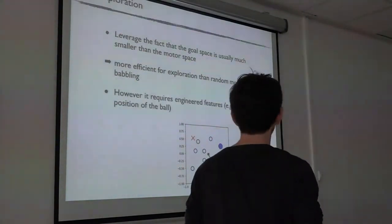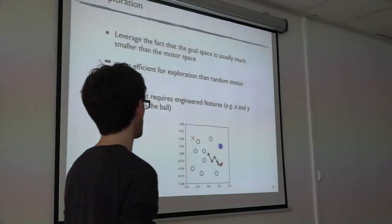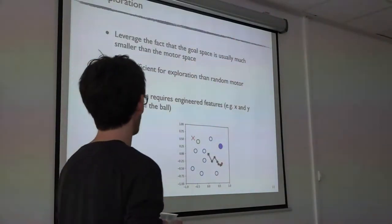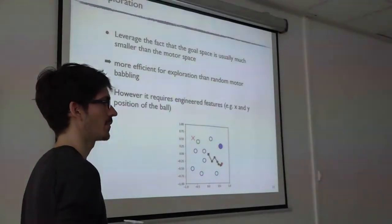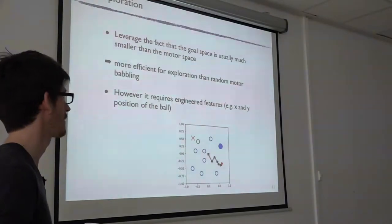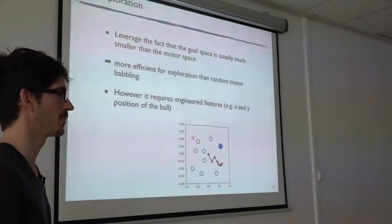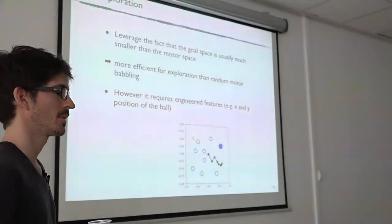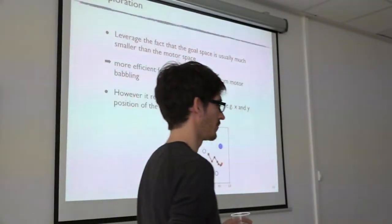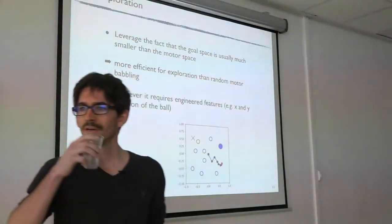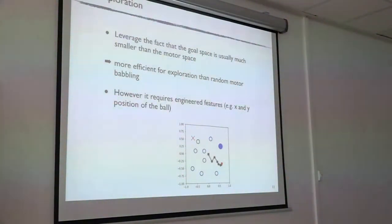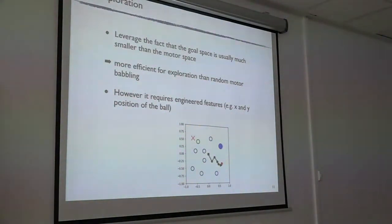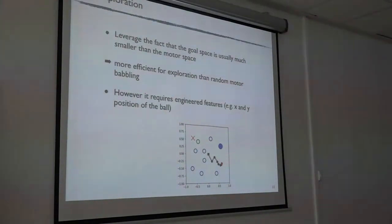One drawback is that it requires handcrafting the goal space — in this case, the X and Y position of the ball. In some environments like half cheetah, it's hard to determine what would be a good goal space. It's less and less obvious that having a small goal space is a necessity; in some cases, increasing the dimension can even be beneficial, though we don't fully understand this. What matters more is that the goal space is structured — you want it to be structured, and the size may be less important than the structure.